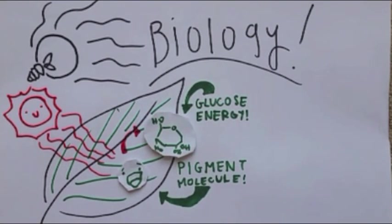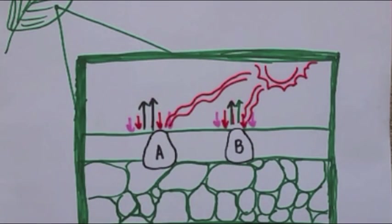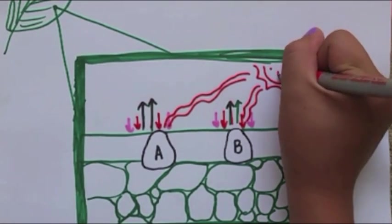In order to capitalize on the amount of usable light, many plants have several types of pigments, like chlorophyll A and chlorophyll B, that absorb different wavelengths.